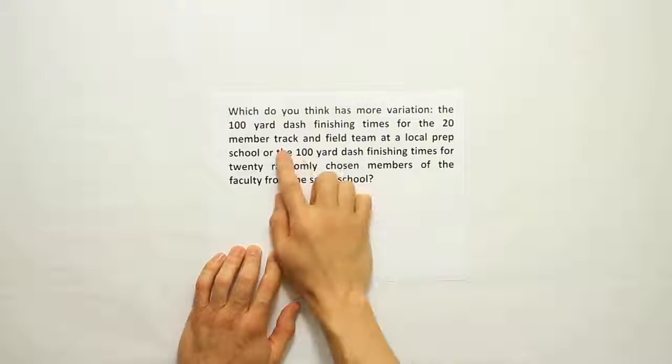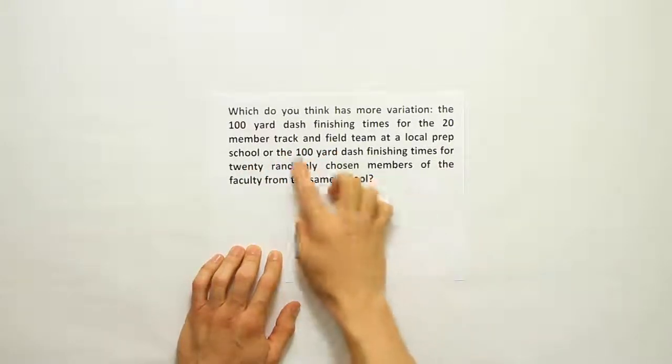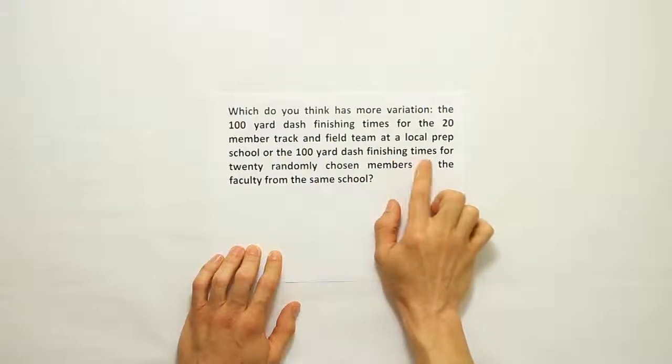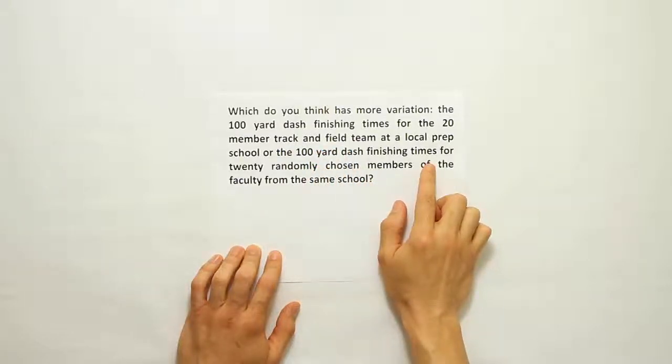If you look at the first group, they're track and field members for their high school. They're going to be running the 100-yard dash and we're looking at their finishing times. Even though there might be some long-distance runners and maybe some short-distance runners and they might have different finishing times based on their specialty,